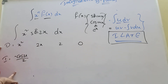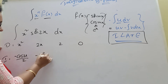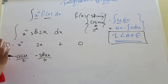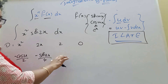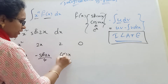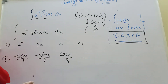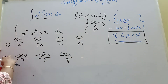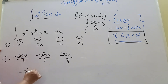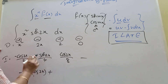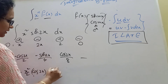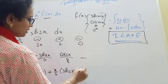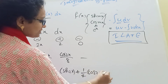For integration of x squared times cos 2x: applying the tabular method with alternating signs plus, minus, plus, minus, we get: minus x squared divided by 2 times cos 2x, plus 2x divided by 2 times sin 2x, plus 1 over 4 times cos 2x, plus C. This is the final answer.